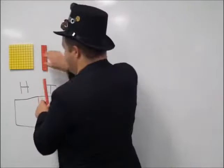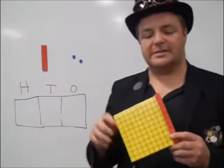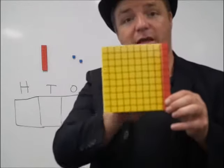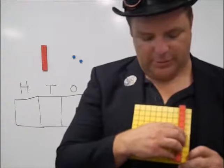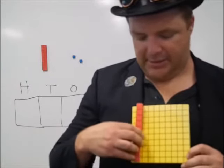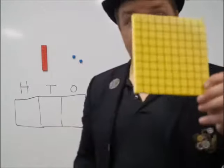However, with hundreds, can you see one of these? There's only one line in the hundred. If I have ten of these, all the way across one, two, three, four, five, six, seven, eight, nine, ten, I have one hundred.